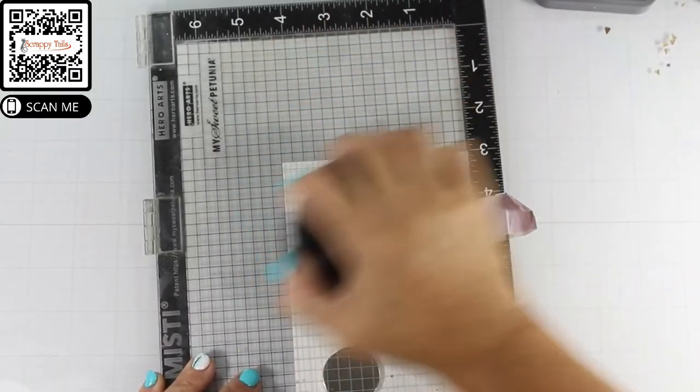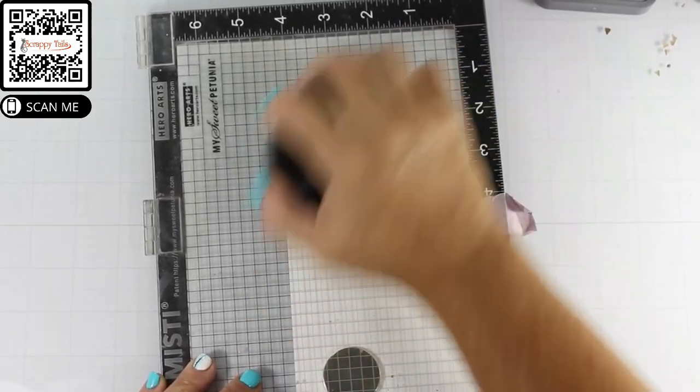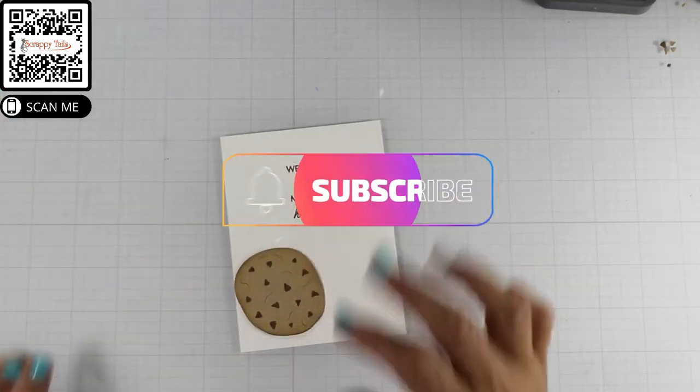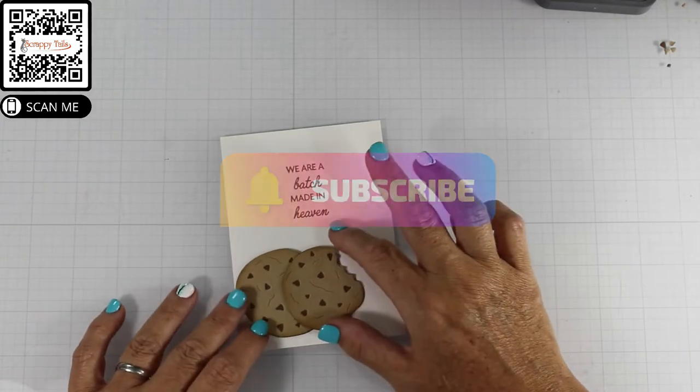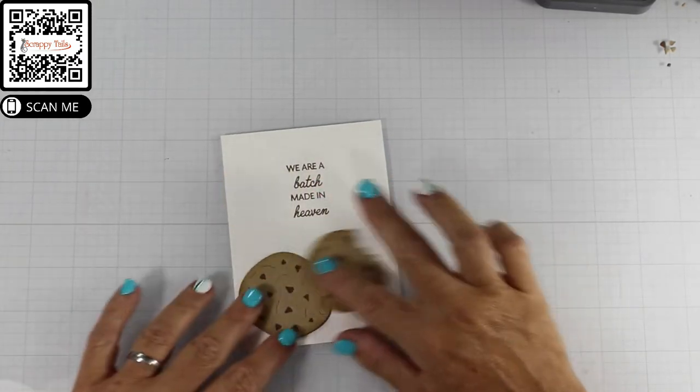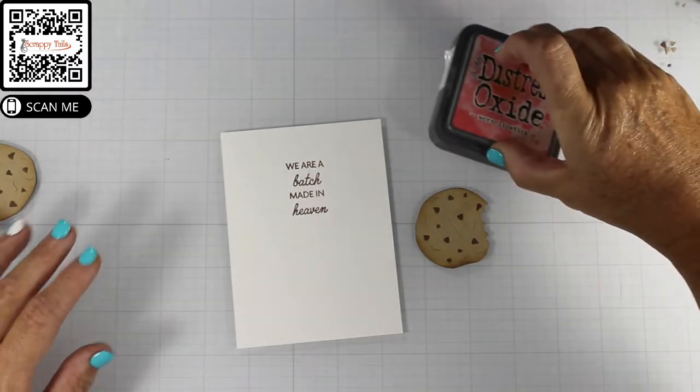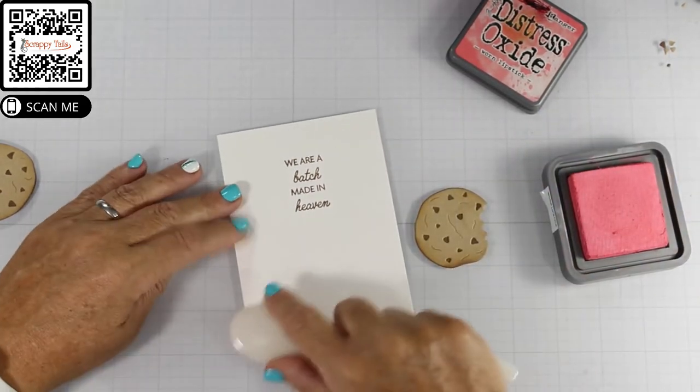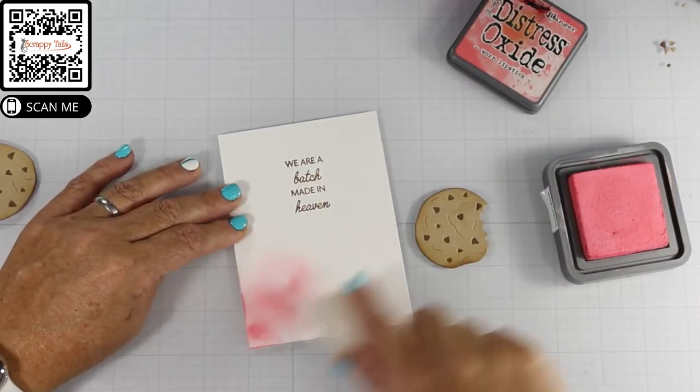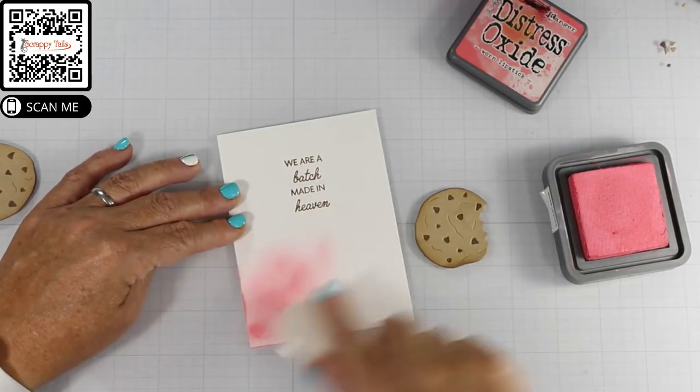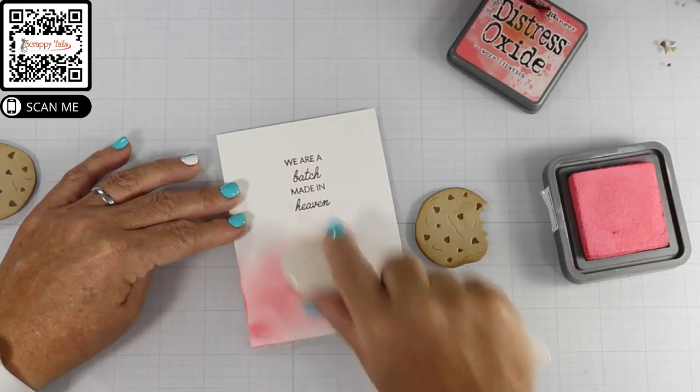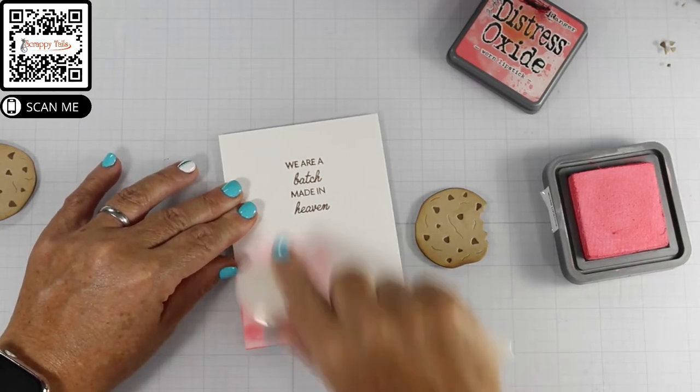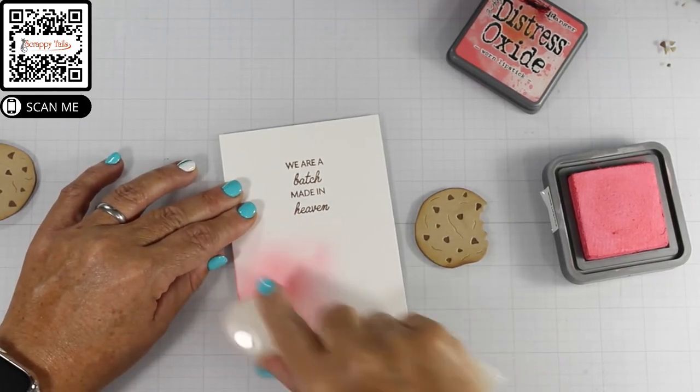I did trim my base down to measure three and three quarters by five just so that I had the ability to matte it onto my A2 card base. So now you're seeing me kind of play with the arrangement to see how I want that to go. And the reason I did that was because I wanted to know where to blend the worn lipstick Distress Oxide and I just blended that on again with a quick, dirty blend. When I say dirty, I mean not smooth. I just wanted to get some color down because the majority of the color was going to be hidden by the cookies. So I just wanted to give it a halo.